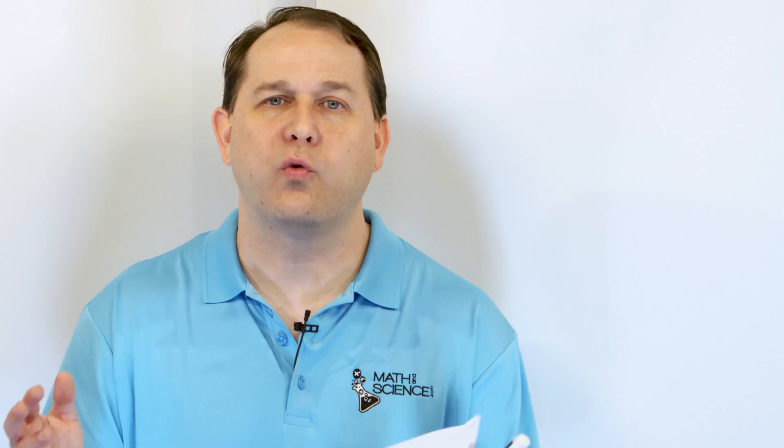Now that we have conic sections under our belt — circles, parabolas, ellipses, and hyperbolas — we can have systems of equations that involve these quadratic functions. Quadratic just means it has a square term. Circles and ellipses have x-squared and y-squared terms everywhere, so they're quadratic in nature. We now have systems called quadratic systems, where we graph more than one conic section — like a circle and an ellipse, or a circle and a hyperbola — and we look for the intersection points. We can have zero, one, two, three, or up to four intersection points.